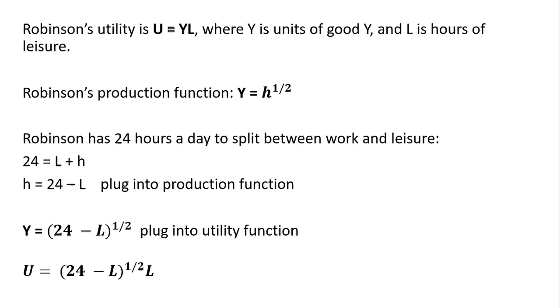So the first thing we'll do is make a substitution into the production function where we have H. We're going to put in 24 minus L. So Robinson's production function can be expressed here in terms of leisure hours.